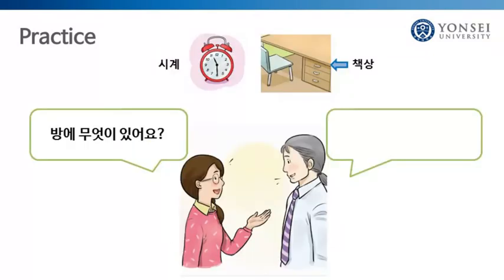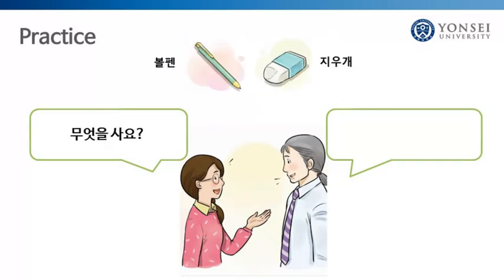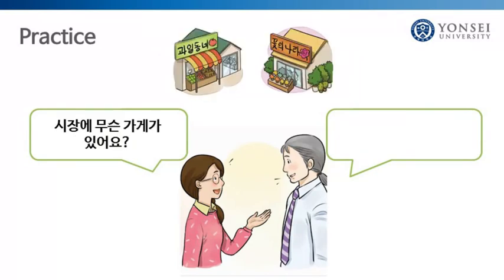Now listen to the questions and answer. 방에 무엇이 있어요? 시계와 책상이 있어요. 무엇을 사요? 볼펜과 지우개를 사요. 시장에 무슨 가게가 있어요? 과일가게와 꽃가게가 있어요.